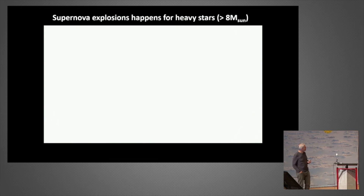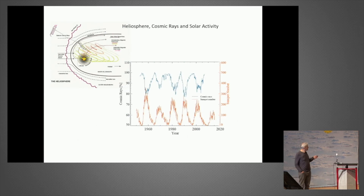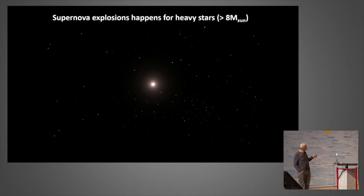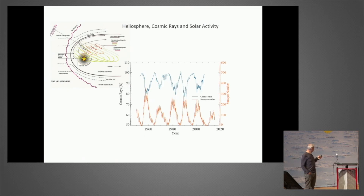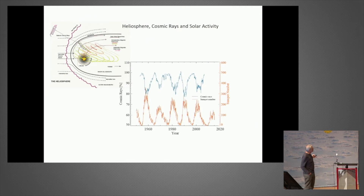Where do cosmic rays come from? They come from large stars that explode. When these stars explode they accelerate particles to enormous energy, and then they enter into the solar system where they meet the sun's magnetic activity. From 1960 to about 2000, you see that when you have many sunspots you have a low cosmic ray flux—the shielding is better when the sun is very active—so there is an inverse correlation between sunspots and cosmic rays.